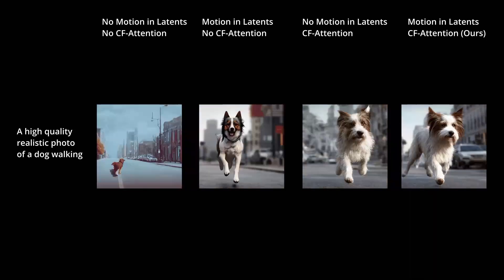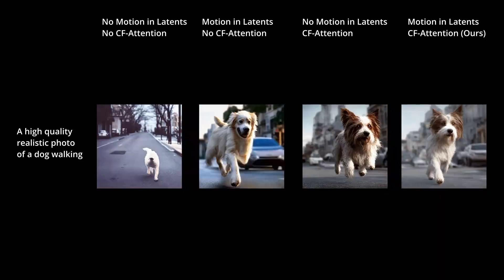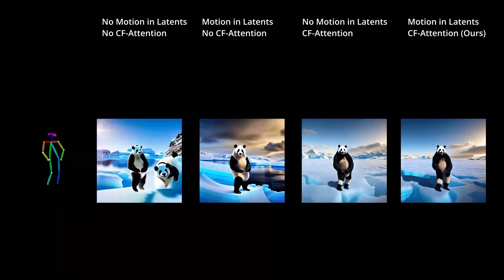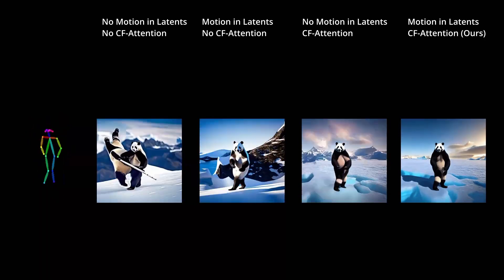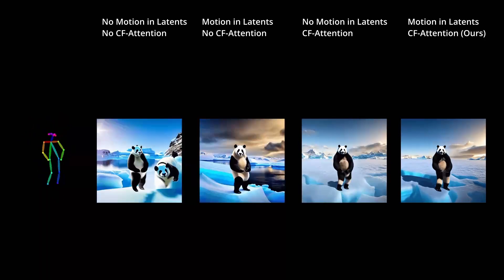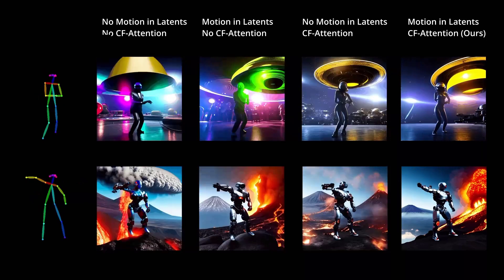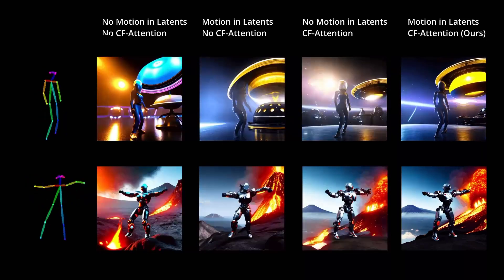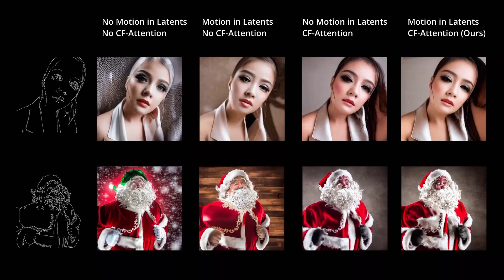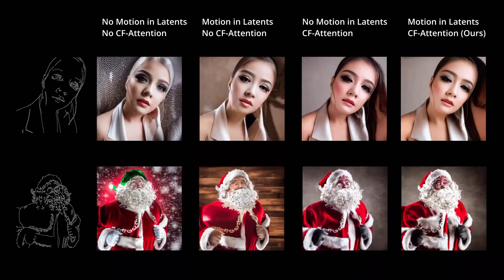An ablation study was conducted to test the effectiveness of the two main components of the proposed method: making initial latent codes coherent to motion, and using cross-frame attention. As you could see, removing any of them will cause a significant reduction in temporal consistency. The appearance and position of the object changes very quickly, and the background is utterly inconsistent.